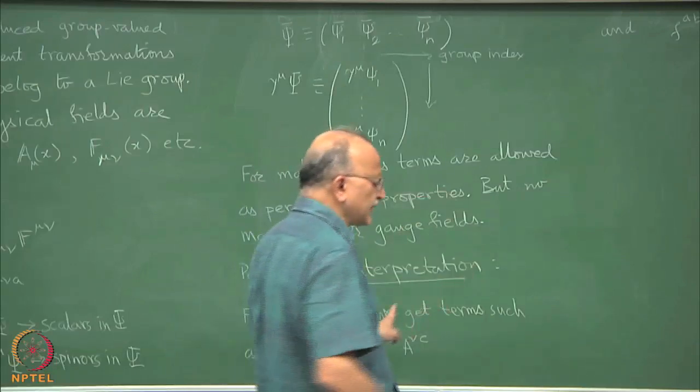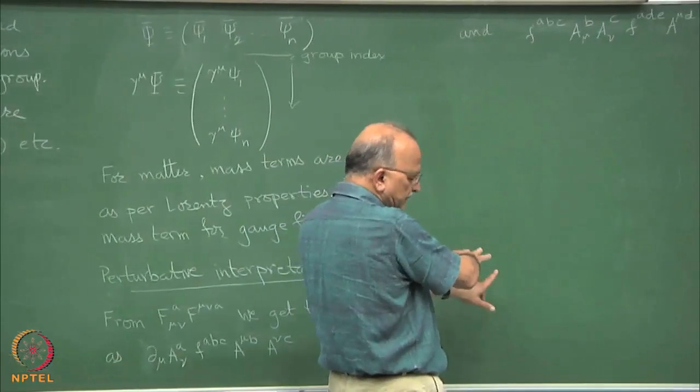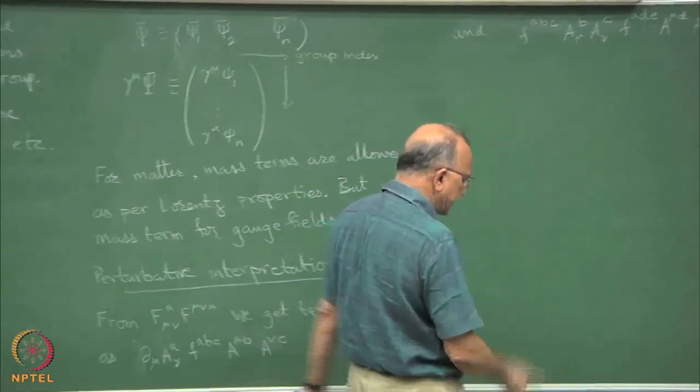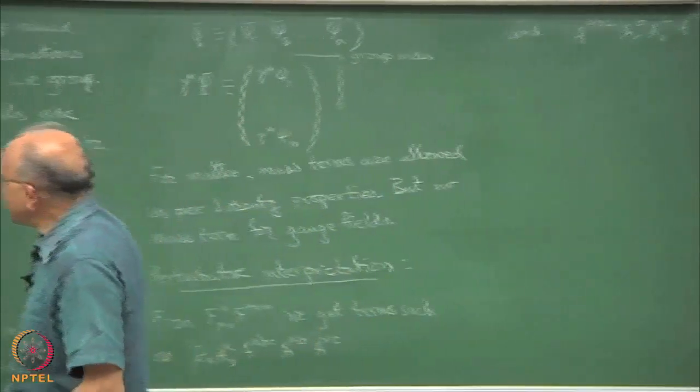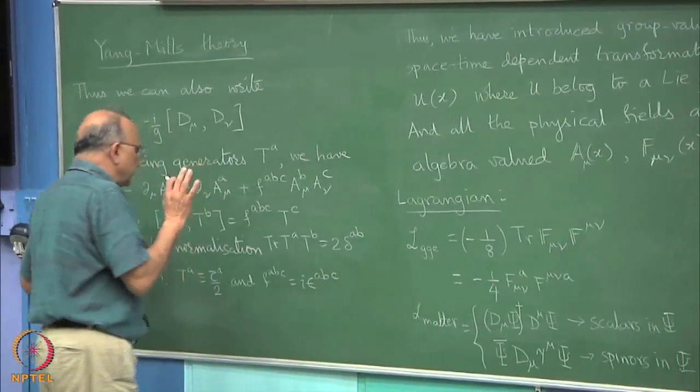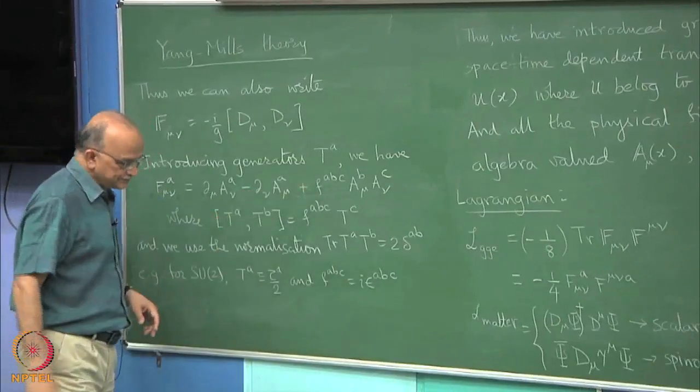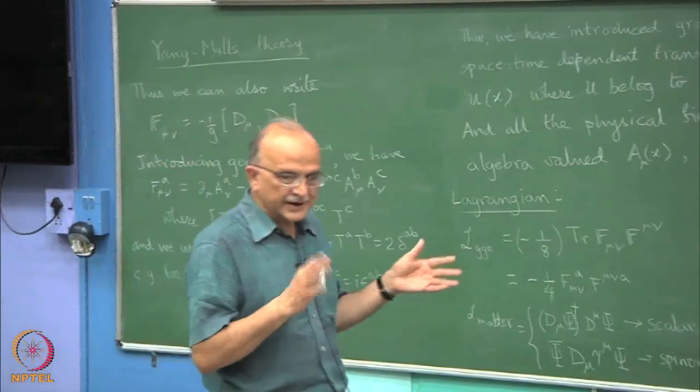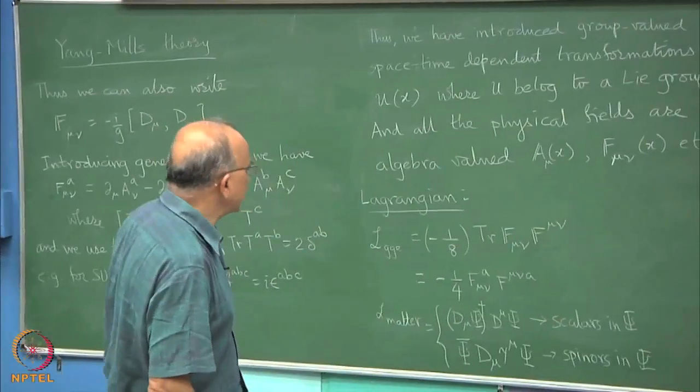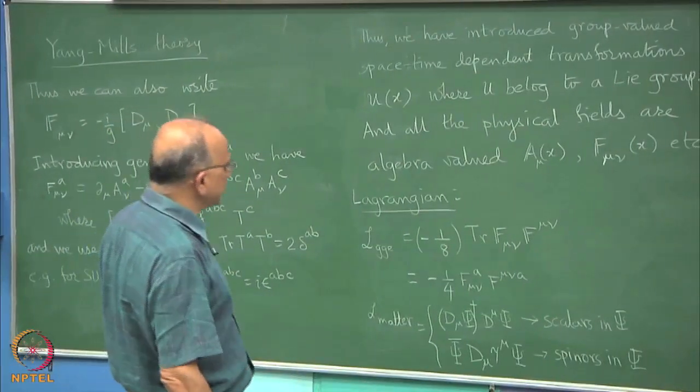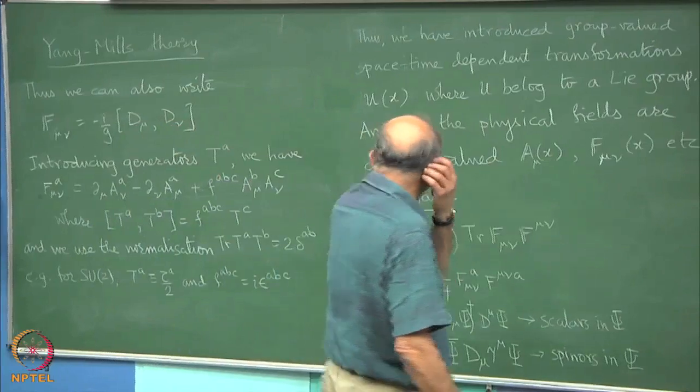You remember we did d mu d nu and we got IG for the first terms and that got G square. There is a G multiplying this. I will tell you very frankly several books will not display a G when they just want to discuss the geometry and the underlying structure.